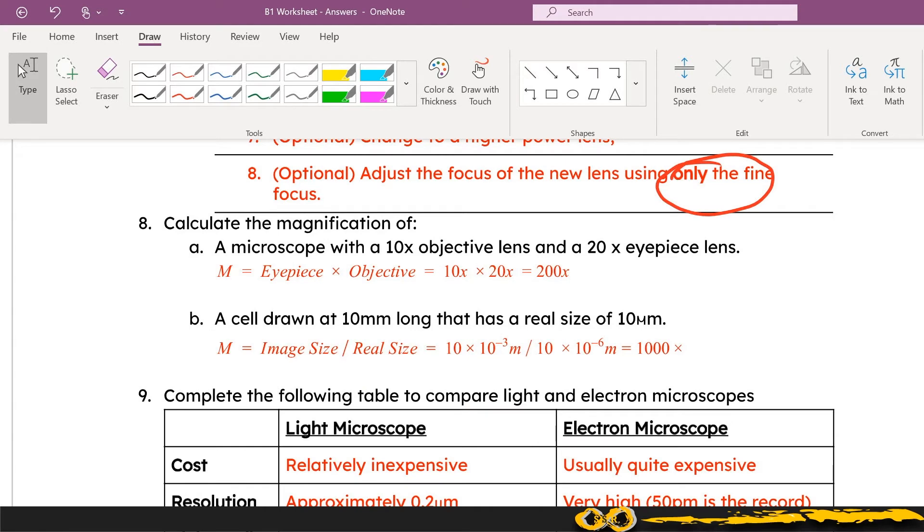In terms of the microscope calculations, just make sure that you're able to recognize which formula you need to use. When you've got the image size real size questions, remember that they're likely going to ask you to do some unit conversion and you can shortcut your way through this by directly putting in the multiplier, so 10 to the minus 3 for millimeters and then 10 to the minus 6 for micrometers. Even though this isn't full standard form with the number 10 being larger than 9.9, your calculator will still understand 10 times 10 to the minus 3 and that saves you that step of having to do that conversion.